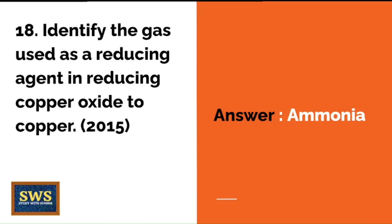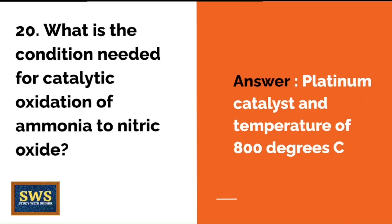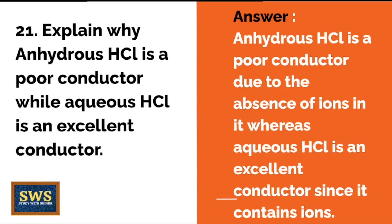Identify the gas used as a reducing agent in reducing copper oxide to copper — the correct answer is ammonia. HCl is also known as muriatic acid; that's the name of the aqueous solution of HCl. What conditions are needed for catalytic oxidation of ammonia to nitric oxide? A platinum catalyst and a temperature of 800 degrees Celsius.